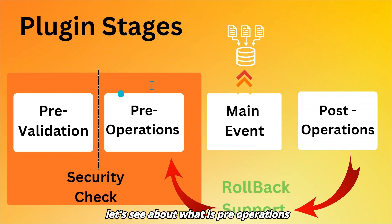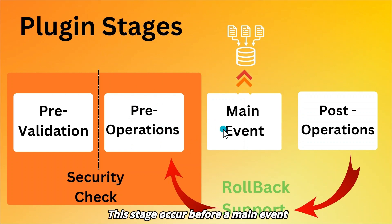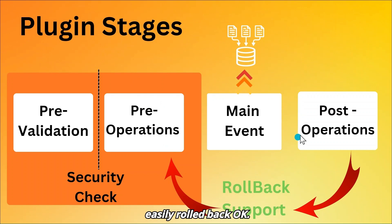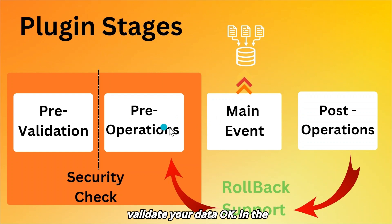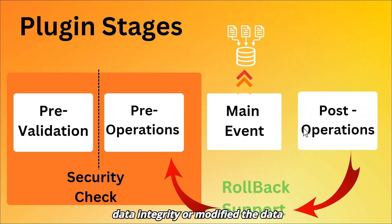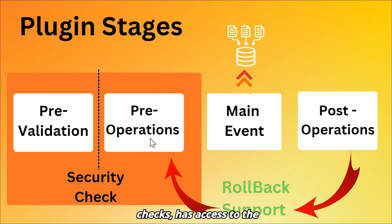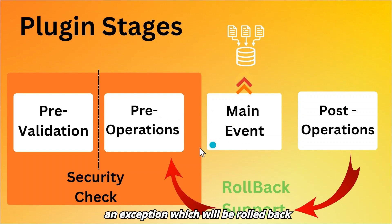What is pre-operation? This stage occurs before the main event but within the database transaction, so it can be easily rolled back. It is used for modifying and validating data before it gets persisted to the database. It is suitable for scenarios where you need to ensure data integrity or modify data before the actual operation happens. It runs after the security check, has access to the transaction context, and can cancel the operation by throwing an exception, which will rollback the transaction.